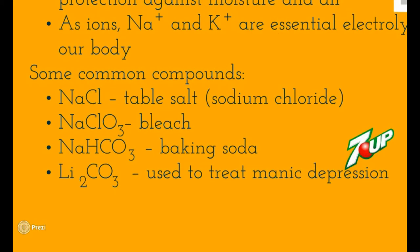Some compounds commonly found in alkali metals: obviously table salt; also potassium chloride, which is another type of salt for health nuts; NaClO₃, which is bleach; baking soda — we're actually going to be turning baking soda into table salt later. You might ask how you can do that — it's actually very easy.